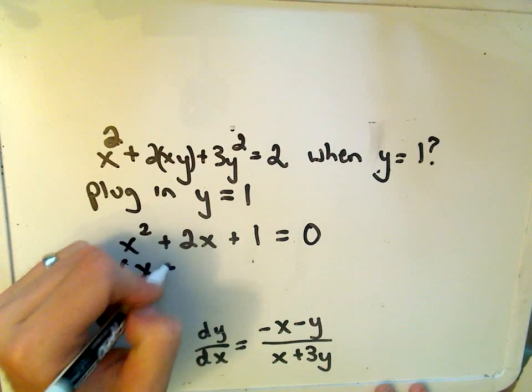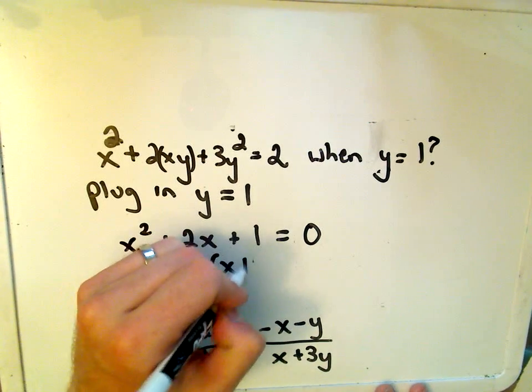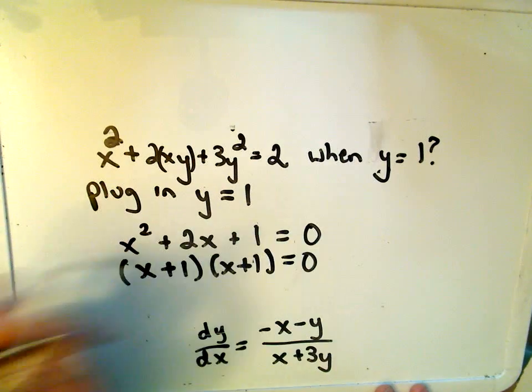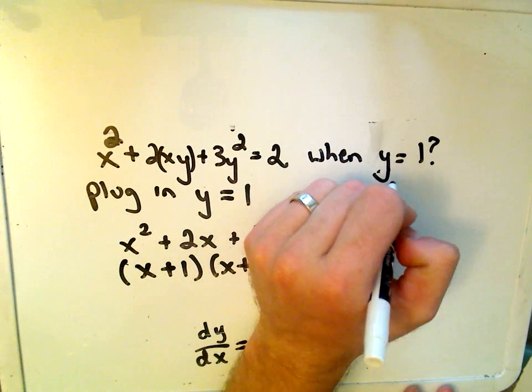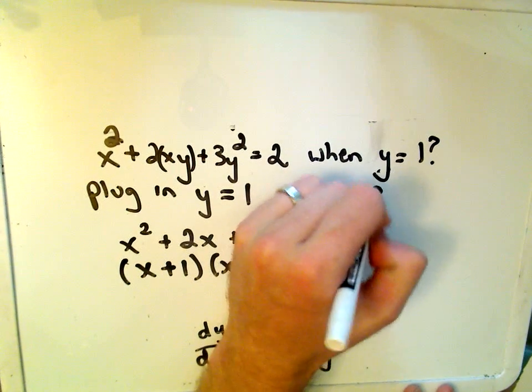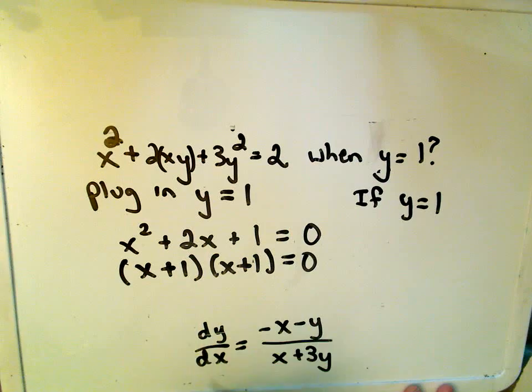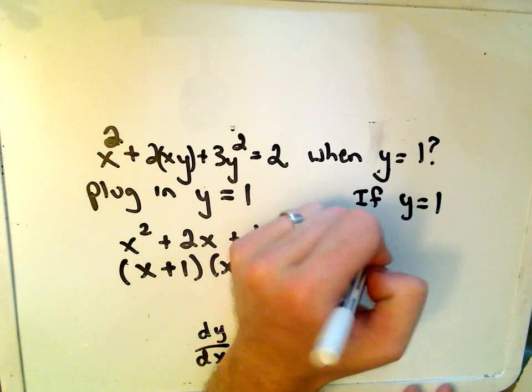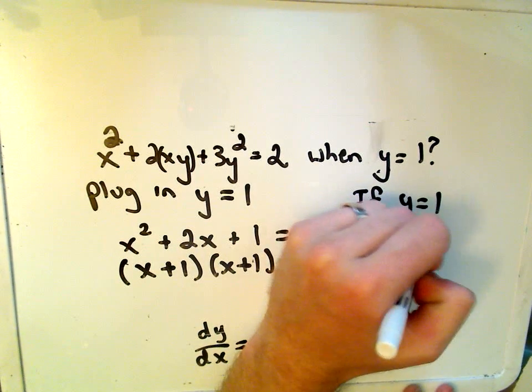Well, this factors as x plus 1, x plus 1 equals 0. So we know that when y equals 1, if we solve this, we'll simply get that x equals negative 1.